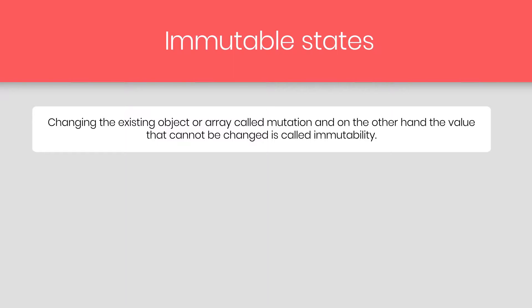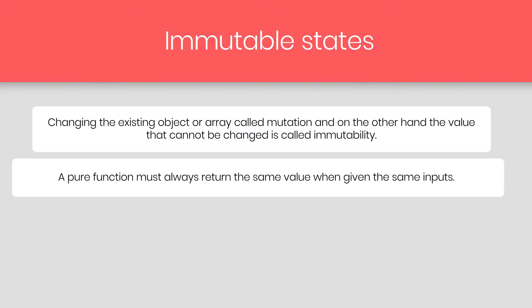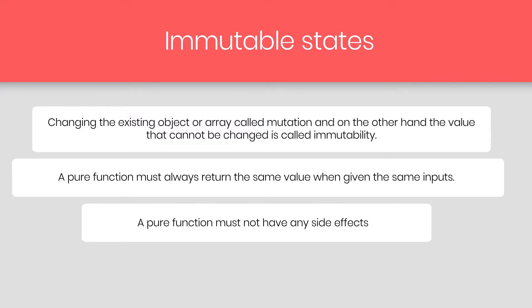We can update and change object and array values in JavaScript, but there are some rules when working with pure functions to change objects or arrays. A reducer is a pure function, and in order to change your object or array, you must follow these rules. A pure function must always return the same value when given the same input, and must not have any side effect. If you change the initial state of your store without making a copy of it, that is a side effect of your pure reducer function. If you are using Redux, you need to know how to modify your state immutably without changing it directly.